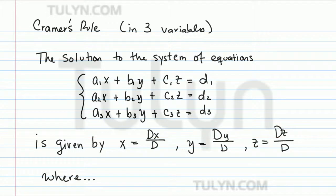Cramer's Rule can be extended to the three-variable case. Cramer's Rule for three variables states that the solution to the system of equations where the first equation is a1x plus b1y plus c1z equals d1, the second equation is a2x plus b2y plus c2z equals d2, and the third equation is a3x plus b3y plus c3z equals d3